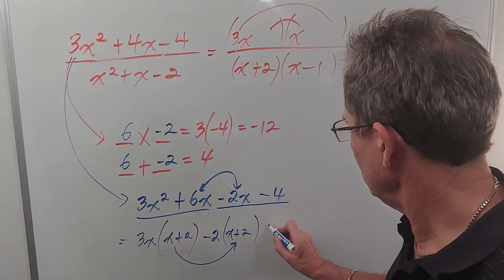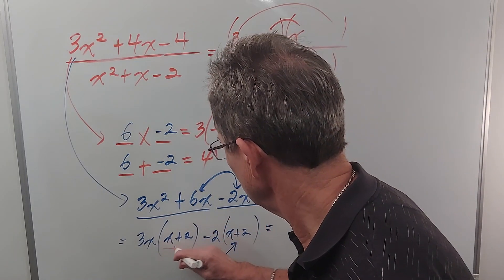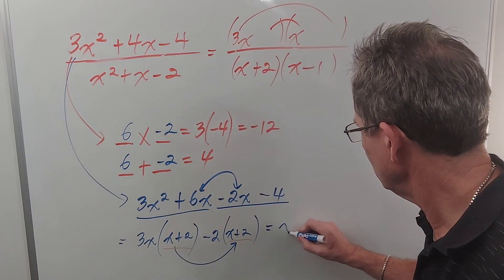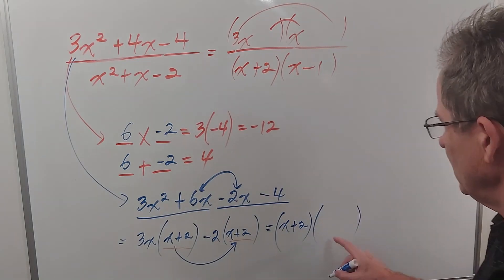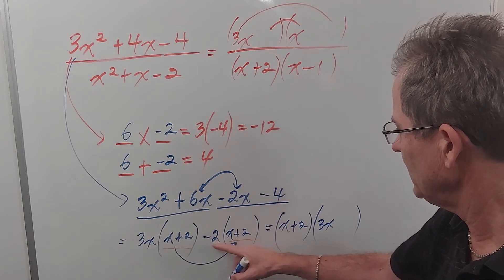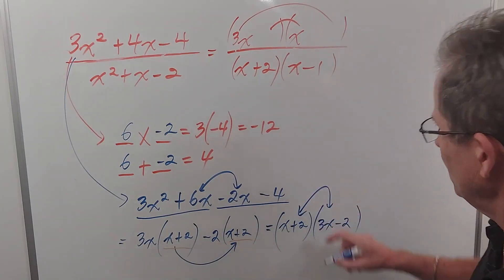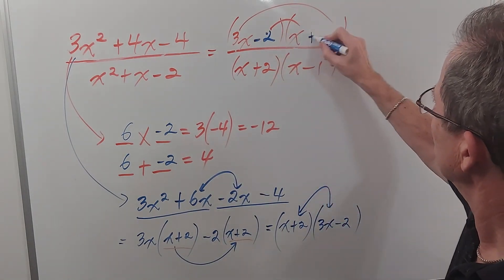And then because the x plus 2s are common we can factor those out. And whatever's left over goes in this bracket. So a 3x from here and then negative 2 from there. Now again I can switch the order which I did up here. So this would be 3x minus 2 and x plus 2.